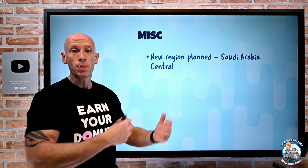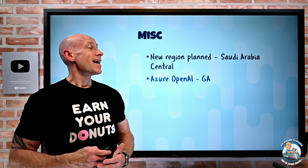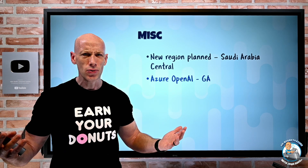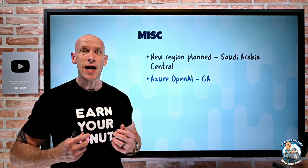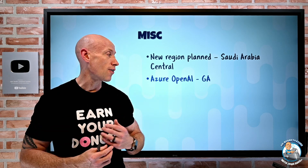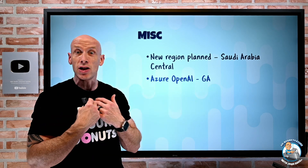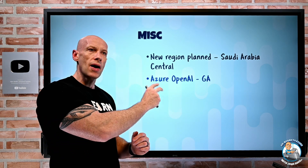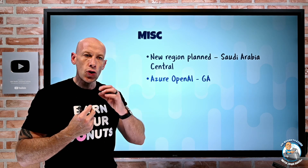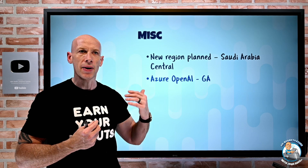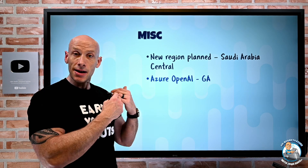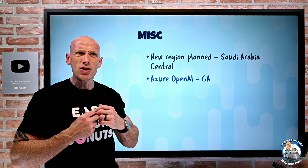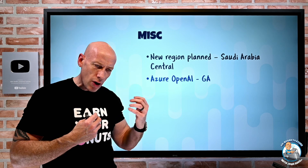And then Azure OpenAI went GA. Obviously there are huge amounts of things in the news this week all about ChatGPT and Microsoft's partnership with OpenAI that created ChatGPT. Its integration with Bing and Edge would have also made available Azure OpenAI as a service. That service brings three of the key technologies from OpenAI — obviously GPT 3.5, which is what ChatGPT is built on.